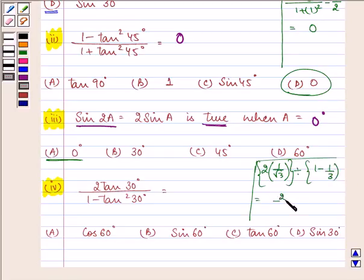So we have 2 by root 3 divided by 2 by 3 which gives us the answer as root 3. And we know that the value of tan 60 degree is root 3.